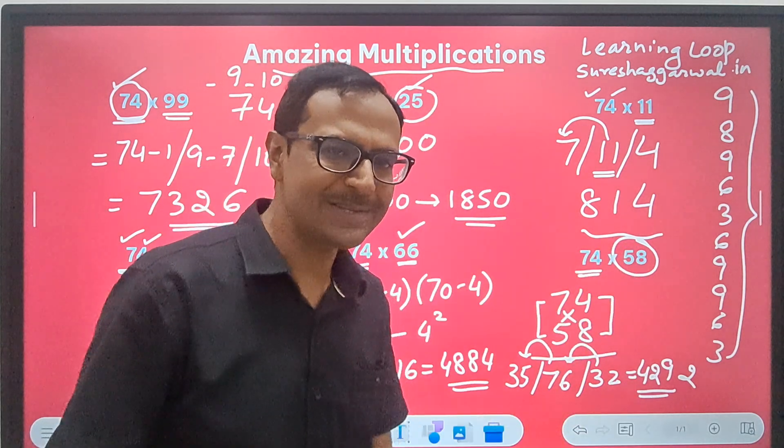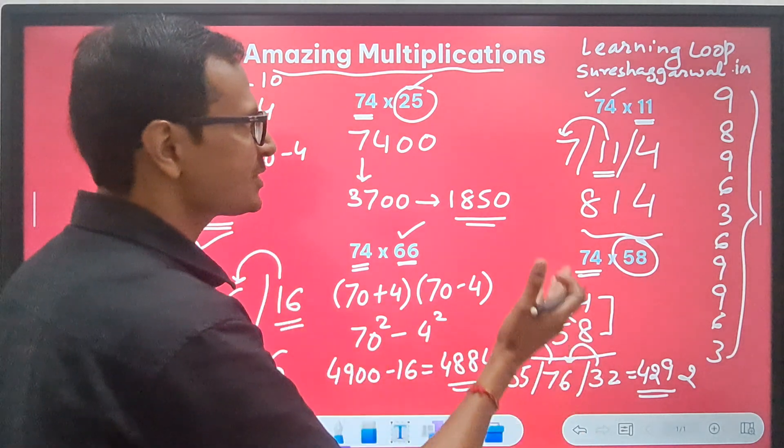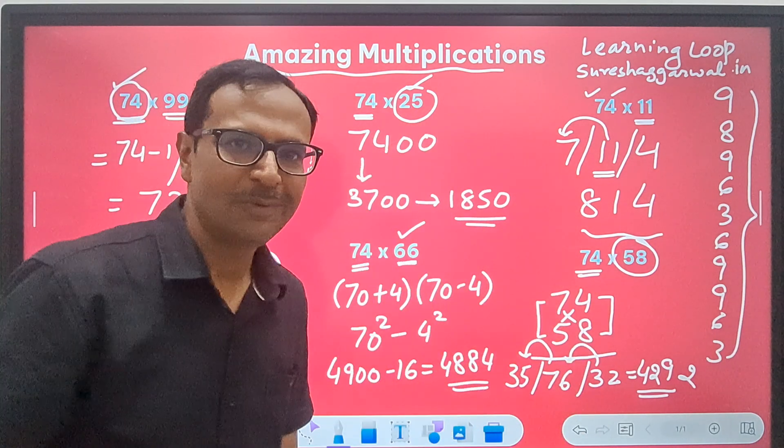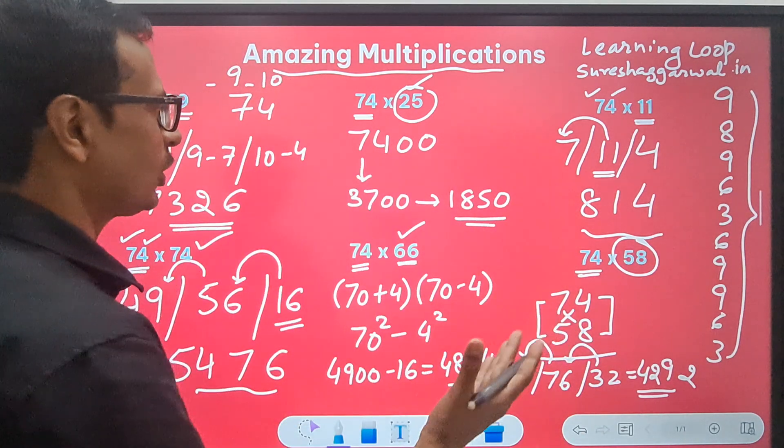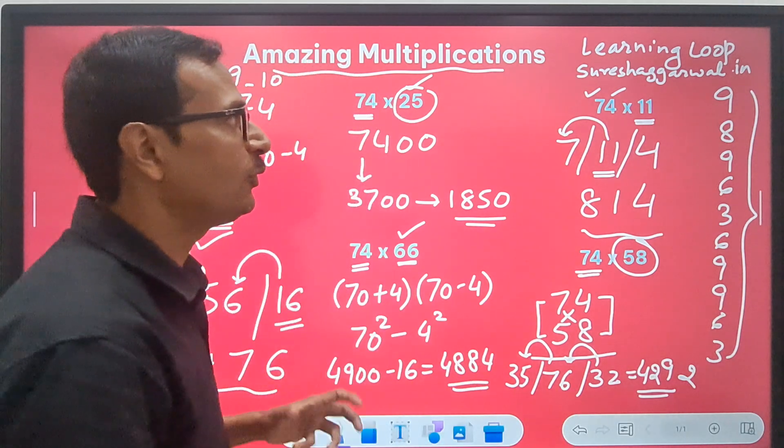6 different short tricks. 6 different numbers. And that's what smartness is all about. Anyone who doesn't know these short tricks. What are they going to do in these questions? They are going to follow.